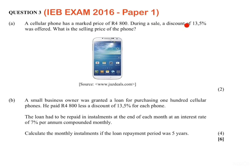During a sale, a discount of 13.5% was offered. What is the selling price of the phone? So here, 4800 is the original price. The phone is on sale and they are discounting it by 13.5%. We are required to find the selling price — that is, the price you would pay to actually purchase the phone.